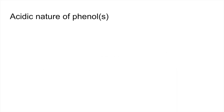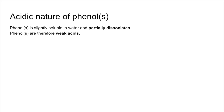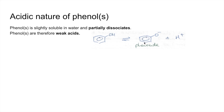So the next thing we'll look at is the acidic nature of phenols. Phenol is slightly soluble in water and partially dissociates, so therefore phenols are weak acids. We can show that with this dissociation or equilibrium. You can see that the H on the OH group is dissociated, donated into the solution as an H+ ion, and we're left with the phenoxide ion.